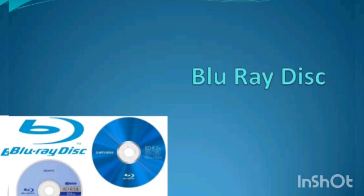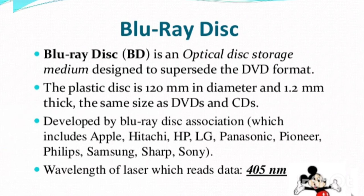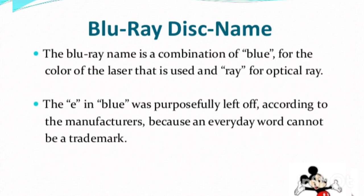Next is the Blu-ray disc, one of the secondary memory storage devices. It looks just like a CD or DVD and is an optical disc storage medium. This Blu-ray disc was developed by the Blu-ray Disc Association, whose members include Apple, Hitachi, HP, LG, Panasonic, and Pioneer. These associations created this Blu-ray disc. The name 'Blu' comes from the blue color laser used in the Blu-ray disc.